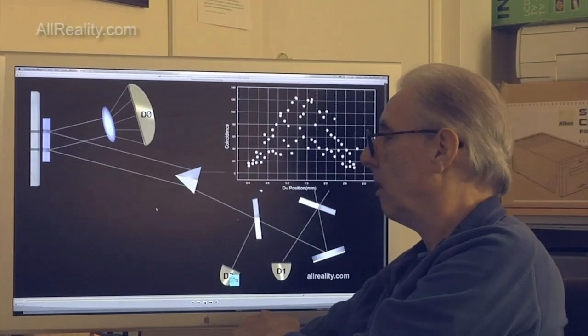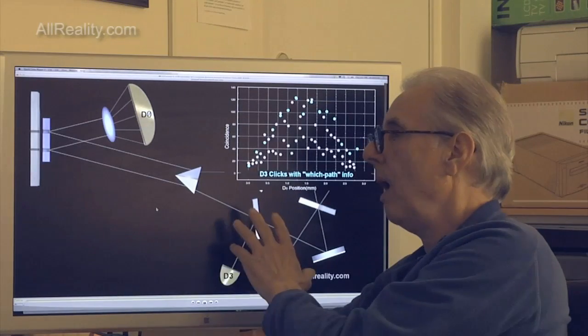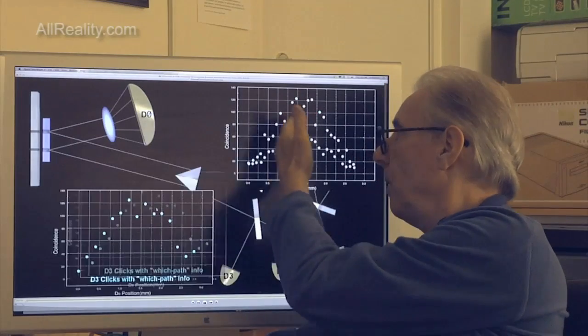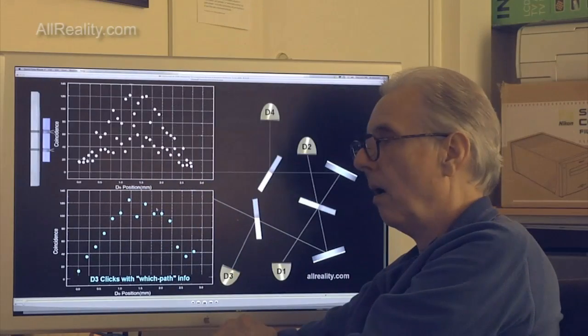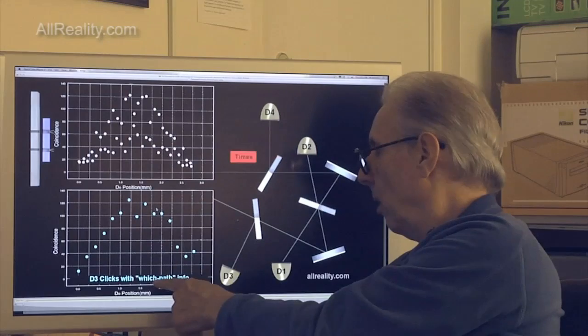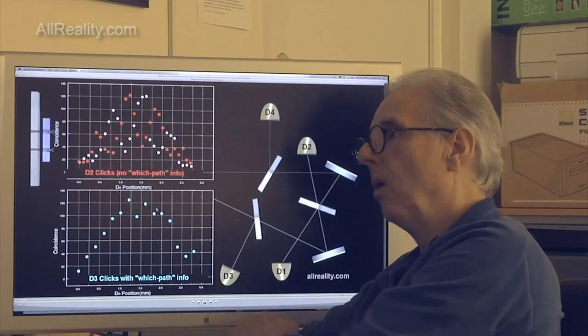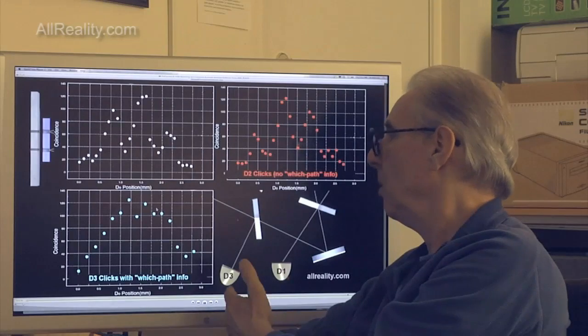And then you plot, for instance, for D3, you plot which of these photons were detected by D3. And you plot which were detected by D2, and so on.